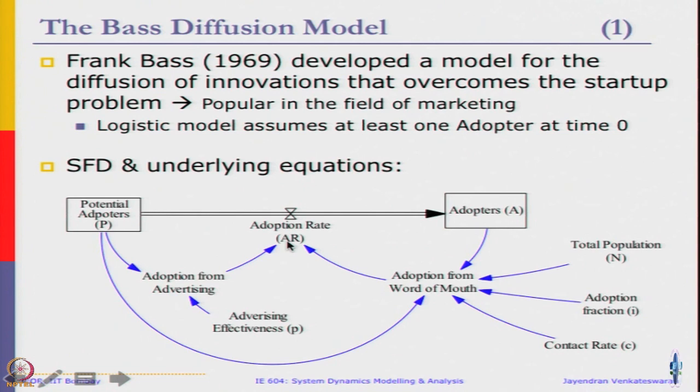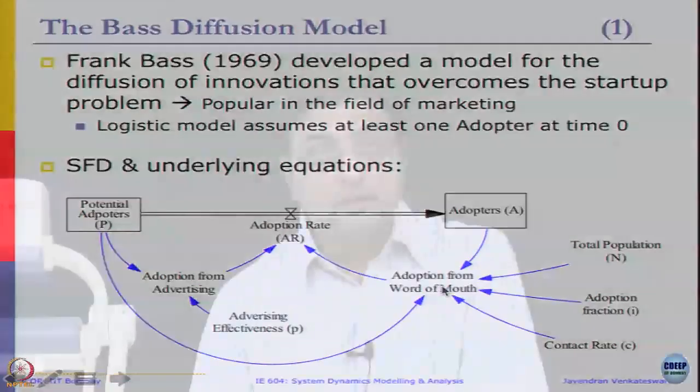We have two things that affect our adoption rate. Again the population is divided into two: potential adopters and adopters. That means eventually all the potential adopters will become adopters. Adoption rate is governed by two factors: one is adoption from advertising and then adoption from word of mouth. Here you can see the adoption from advertising has some potential adopters coming in and advertising effectiveness also affecting it. Adoption from word of mouth is affected by adopters, total population, and fraction adoption, fraction, contact rate, as well as the potential adopters.